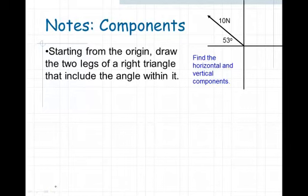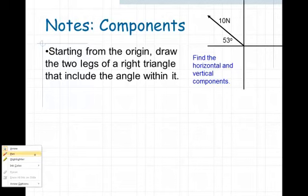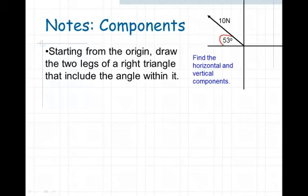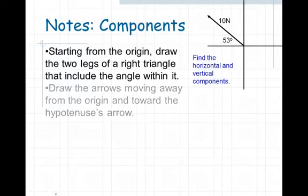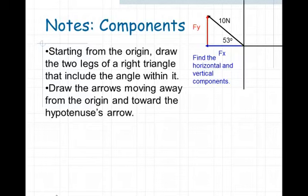The first thing we do is start from the origin and draw the two legs of a right triangle that has the angle within it. We draw the arrows first, moving away from the origin and towards the hypotenuse's arrow. First, we draw our horizontal vector coming from the origin and over to the left, then our vertical vector straight up. Notice our angle is on the inside of this right triangle.